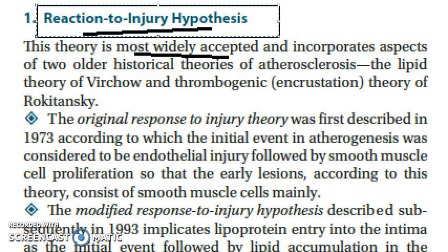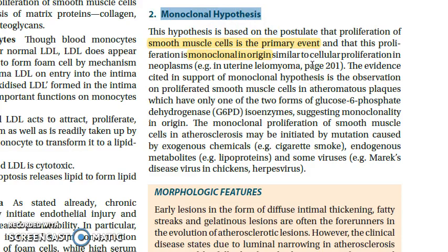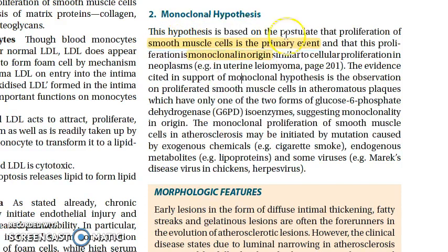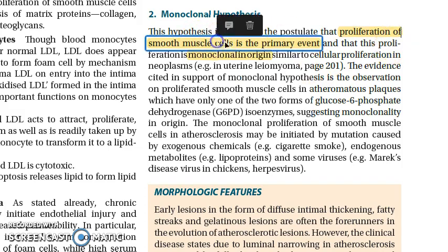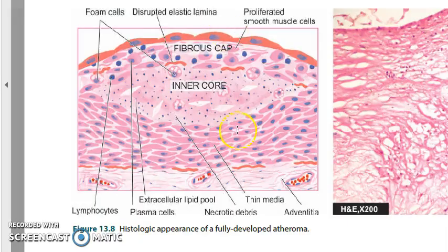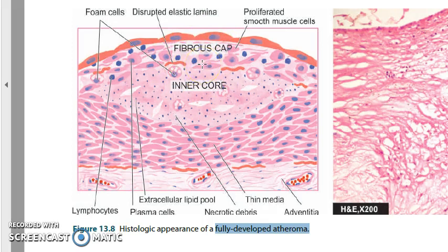This is the reaction to injury hypothesis. The second theory is the monoclonal hypothesis, which holds that smooth muscle cell proliferation is the primary event leading to atheroma. A fully developed atheroma can have a fibrous cap, disrupted elastic lamina, an inner core, thin media, smooth muscles, plasma cells, and lymphocytes.